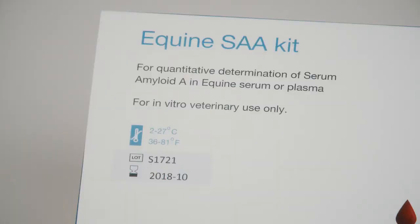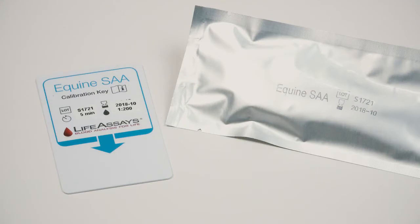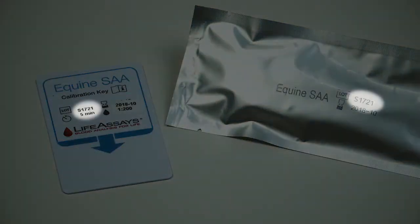Take out the key card and a test pouch from the Equine SAA test kit. Make sure that the lot number on both calibration key and test pouch match.